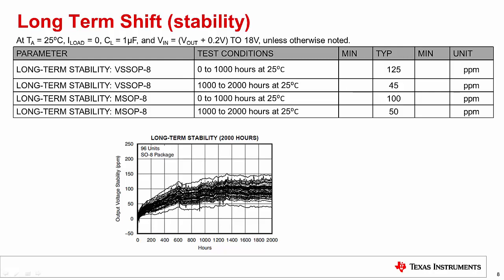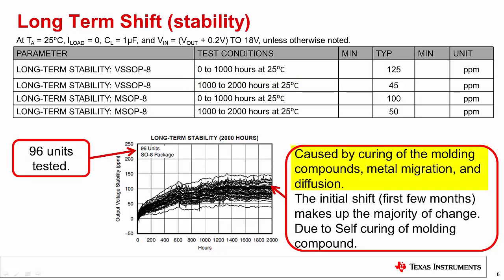Long term shift, sometimes called long term stability, is a measurement of how the accuracy of the device changes with time — sometimes called the aging of the product. All devices will have long term shifts from aging; however, this error is specifically important in references. The table shows a typical shift of the reference output for two different packages, VSSOP8 and MSOP8, specifying output drift from 0 to 1000 hours and from 1000 to 2000 hours. Long term shifts are caused by curing of the molding compounds, metal migration, and diffusion. The long term shifts are largest initially and diminish over time due to self-curing of the molding compound. One way to minimize the effects is to periodically calibrate the product.